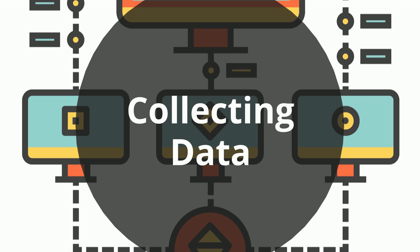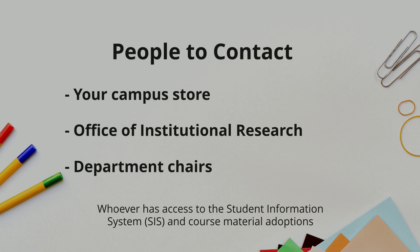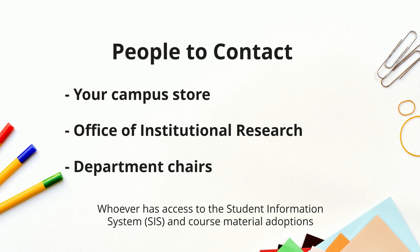This data doesn't have one standard format or process for collection. Depending on your institution, you might partner with your campus store to get textbook adoption information, you may work with an Office of Institutional Research to get information like student enrollment numbers, or you may solicit this information through department chairs or faculty directly. Your process may differ based on who you have access to and how your OER work is perceived across campus. The most important part of this information gathering phase is to get accurate and comprehensive course adoption data. This can be difficult, particularly if you don't have a close relationship with your campus store or administration. Still, you should do all that you can to ensure that your data is complete.